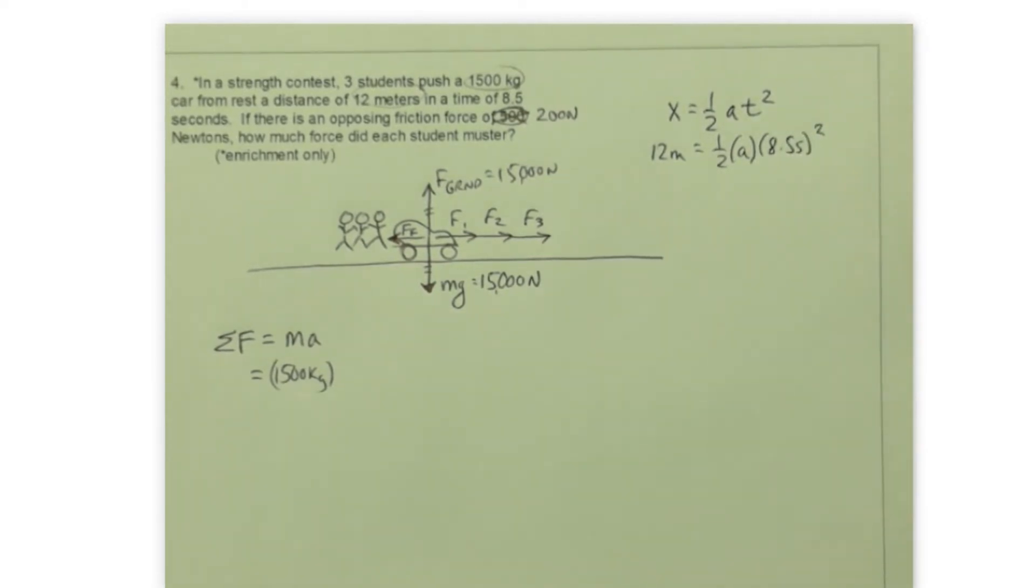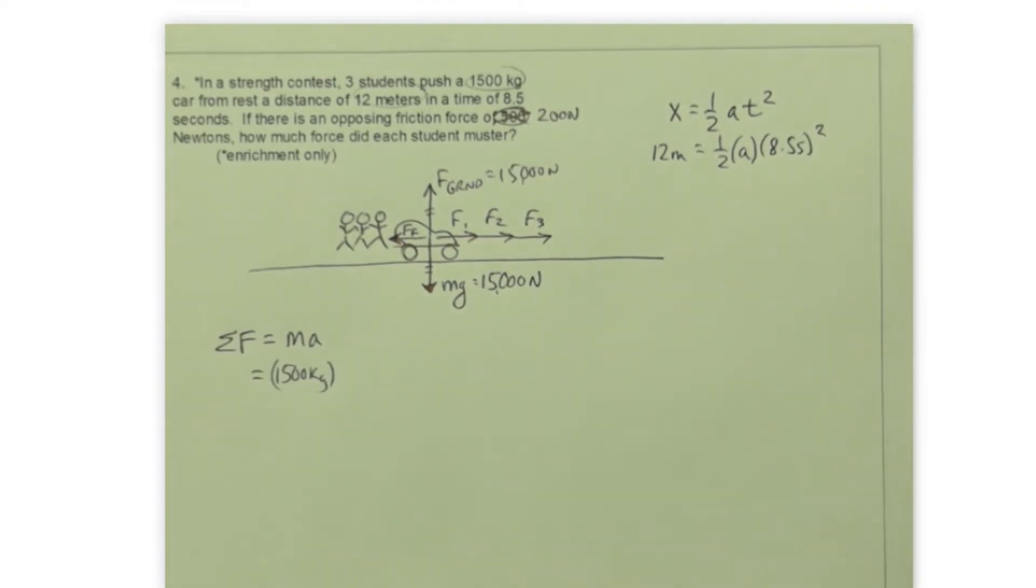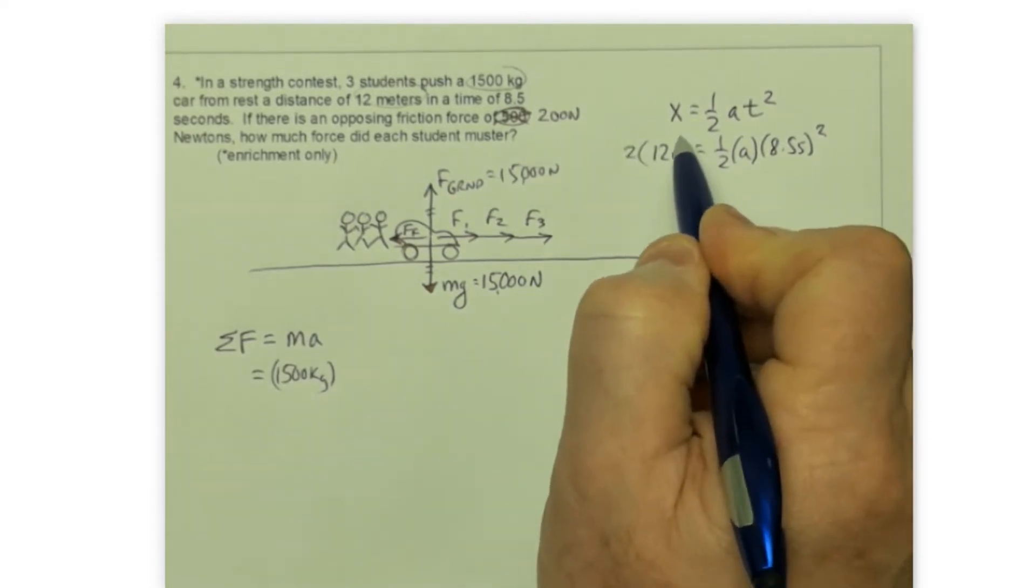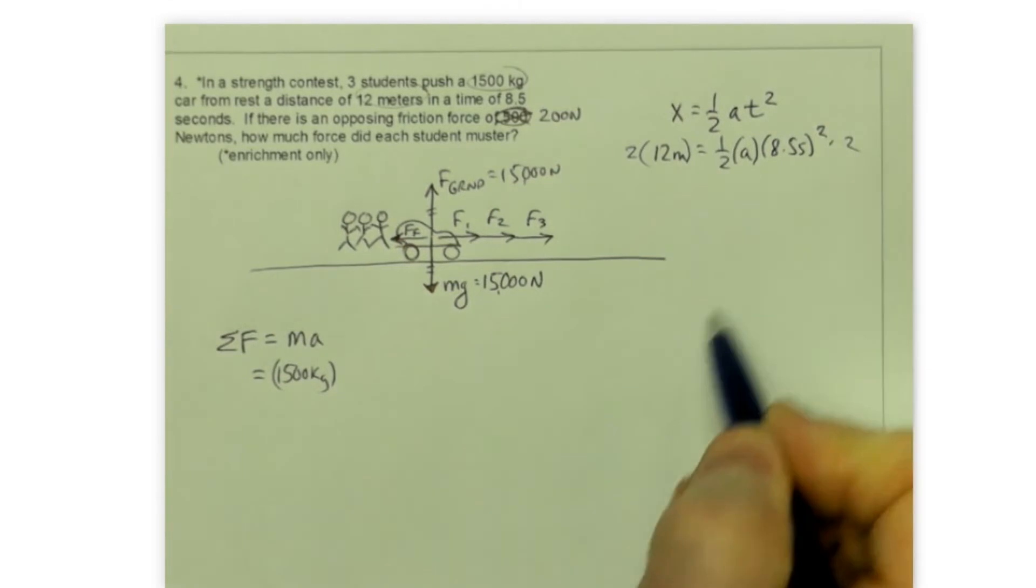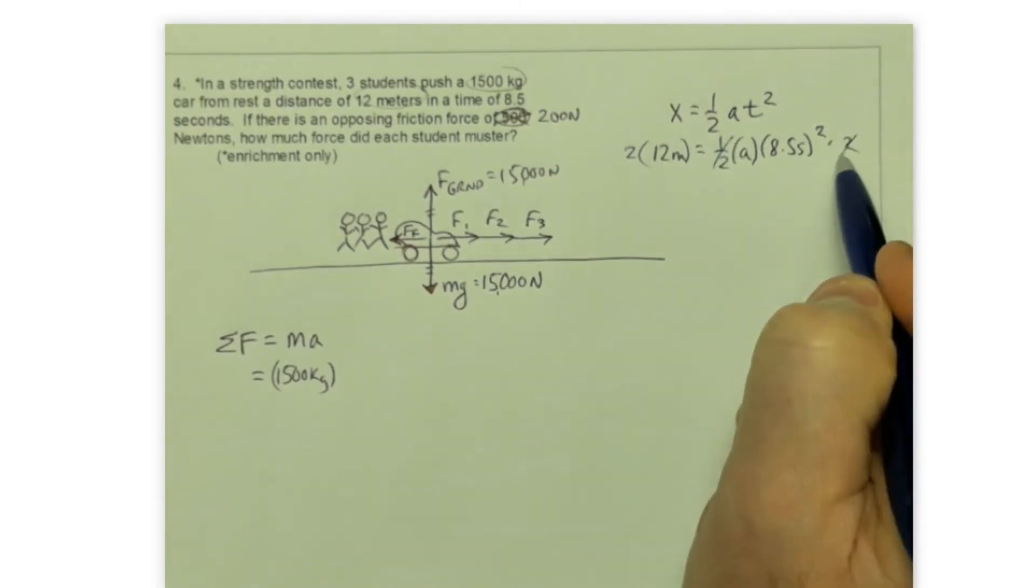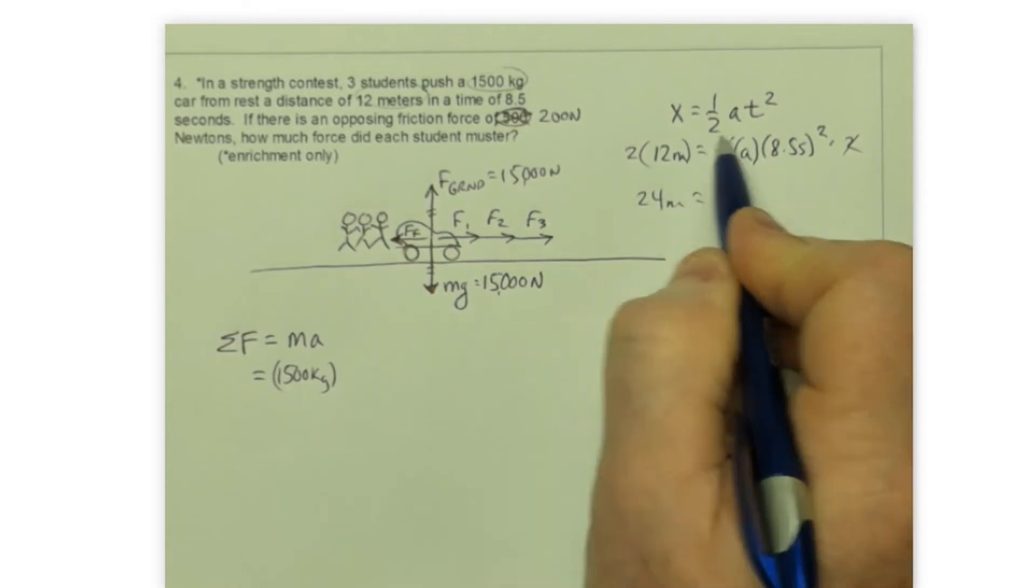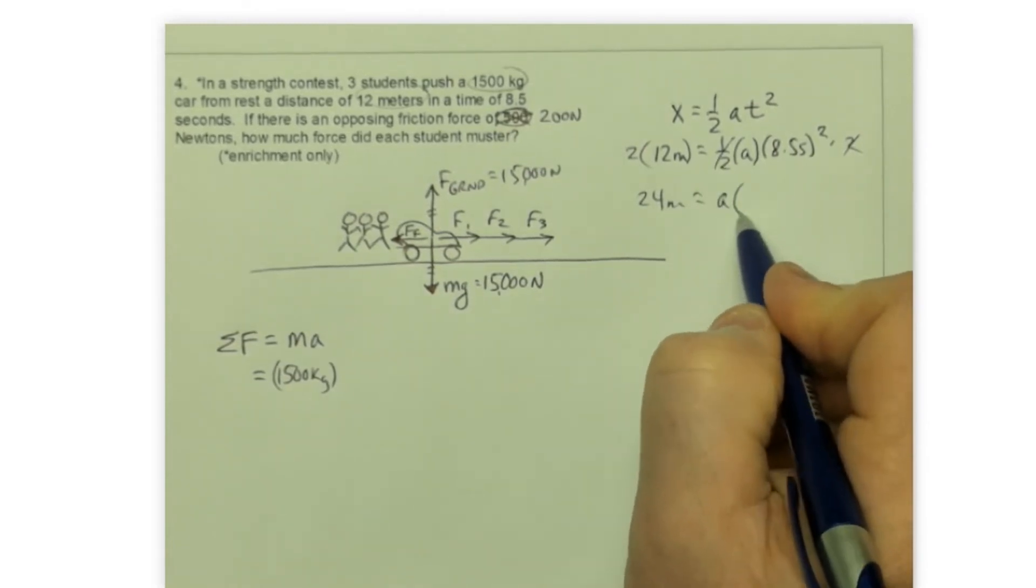Now, our goal here is to solve that for a. There's a number of ways to go through algebraically to get to that. You can do this in your own methods as long as you don't violate any math rules. But I would maybe start multiplying both sides by two. And all I'm doing there is to get rid of that half. So that half turns into a one. And now I've got 24 meters is equal to, let's see, a times 8.5 squared. I'm going to use a calculator for that. So 8.5 squared is 72.25.